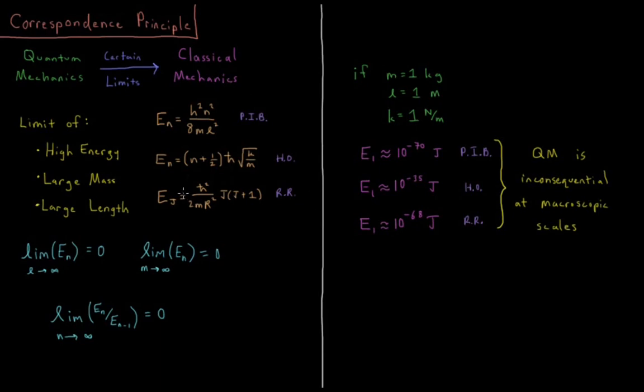And what about the rigid rotor? Rotations of a 1 kilogram, 1 meter object, that's going to be about 10 to the minus 68 joules. So for translations, vibrations, and rotations, there's basically no quantization once we get to values which are comparable to macroscopic length scales, and quantum mechanics becomes continuous and very much in agreement with classical mechanics according to the correspondence principle.